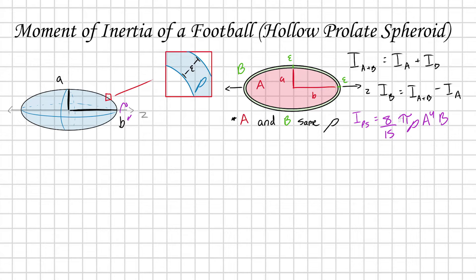Let's continue this problem using this formula. We have I_B equals I_(A+B), which is 8/15 times π times ρ times, what's capital A here? It's going to be A plus epsilon, so (A+ε)^4 times B, and capital B is lowercase b plus epsilon, so B+ε.